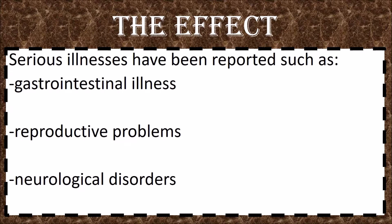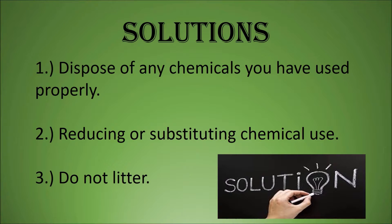Now that we know how we contaminate it, let's discuss how contaminated groundwater can affect us. Drinking this poisoned water can cause various health-related issues. Serious illnesses have been reported such as gastrointestinal illness, reproductive problems, and neurological disorders. Infants, young children, pregnant women, the elderly, and anyone who has a weaker immune system are especially susceptible to illness from some of the contaminants.